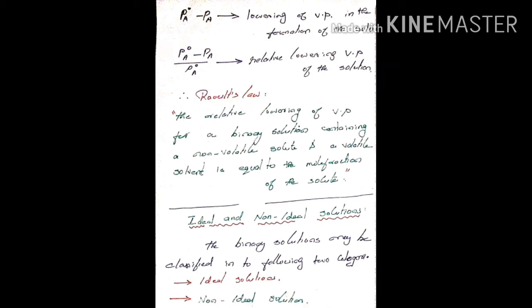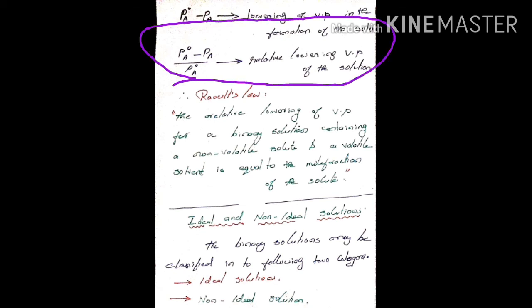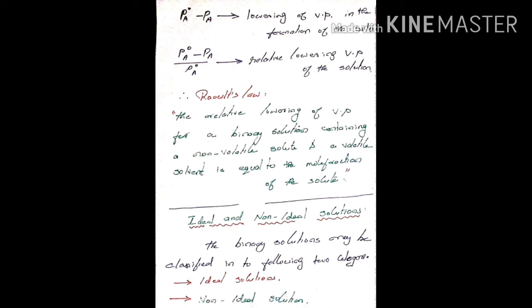So, for a solution containing a volatile solute, for a binary solution we have: the relative lowering is equal to P0A minus PA divided by P0A. P0 minus PB is the lowering of vapor pressure, and P0A minus PA divided by P0A is the relative lowering of vapor pressure.